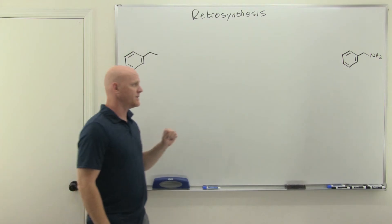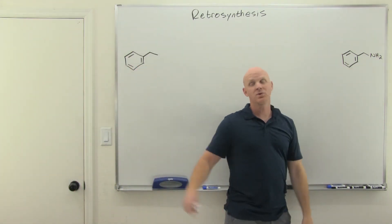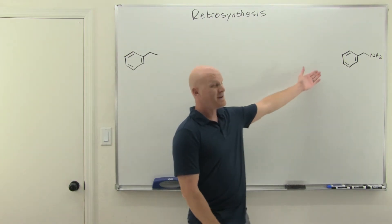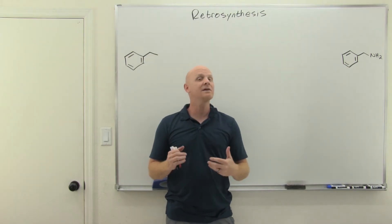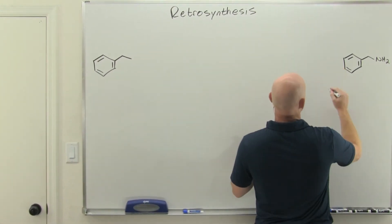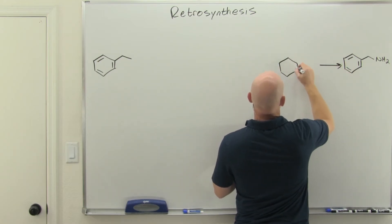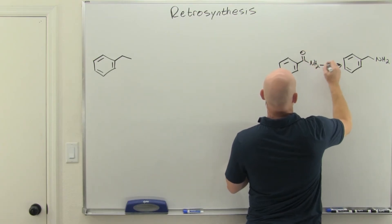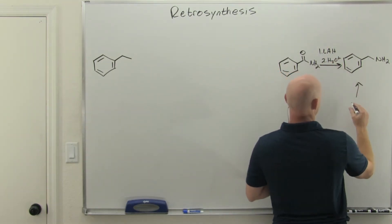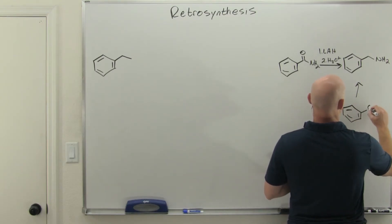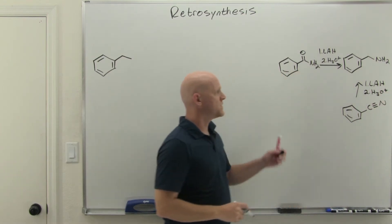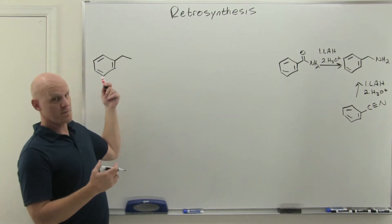In this next example, we want to take ethylbenzene and convert it into an amine, but notice this amine has one fewer carbon than the original starting material, so we need to lose a carbon somewhere along the way. We don't have a huge number of ways to accomplish that. We also haven't covered an entire chapter on amines yet, so we have very few ways of synthesizing amines. In this chapter, we've learned two ways: converting from the corresponding amide using lithium aluminum hydride with an acid workup step, or using the corresponding nitrile also with lithium aluminum hydride.